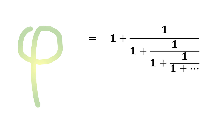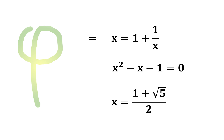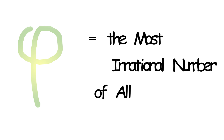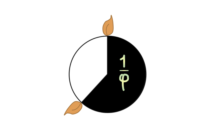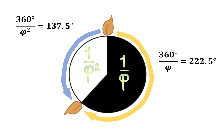The ratio of consecutive Fibonacci numbers is an approximation for phi. It also turns out that pine cone leaves are spaced at angles of one-phi-th of a circle apart. That's 360 divided by phi degrees, which equals 222.5 degrees. Or, going the other way, 360 divided by phi squared degrees equals 137.5 degrees apart.